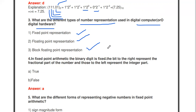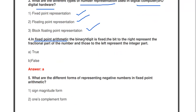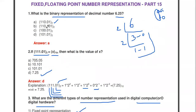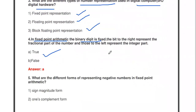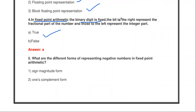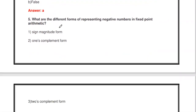In fixed point arithmetic, the binary point is fixed — bits to the right represent the fractional part and those to the left represent the integer part. True or false? It is true. For example, for 6.25, represented as 110.01, the binary point is fixed: the left part represents the integer (whole) part and the right part represents the fractional part.